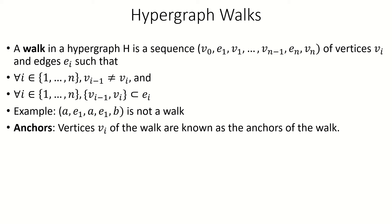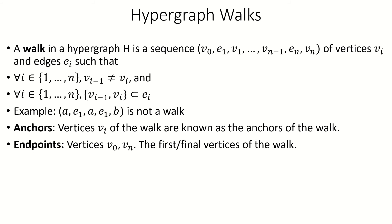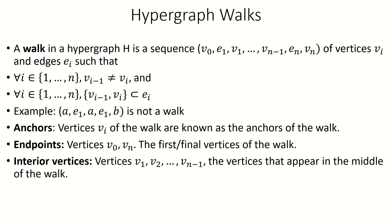The vertices that appear in the walk are known as the anchors of the walk. The first and final vertices appearing in the walk are known as the endpoints, and the rest of the vertices are called the interior vertices.